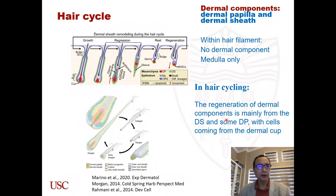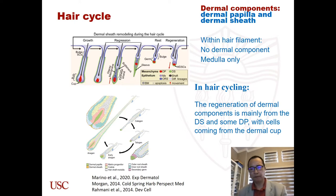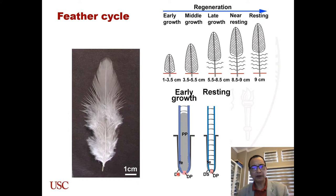In the hair, the dermal components include the dermal papilla and dermal sheath. Dermal stem cells have been found in the dermal sheath. Compared to hair, the feather has three dermal components: dermal papilla, dermal sheath, and pulp.